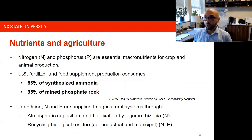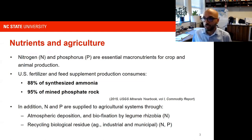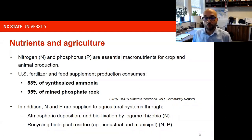If we zoom in specifically on nitrogen and phosphorus — and there's a reason why we typically talk about these two — they are the two major nutrients used in anthropogenic activities, human and agricultural life. Feed and fertilizer consume by far the largest share of synthetic ammonia produced and also from phosphate rock mined.